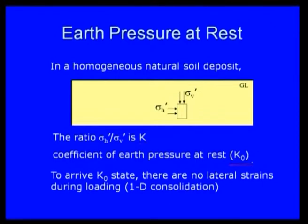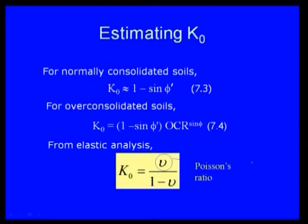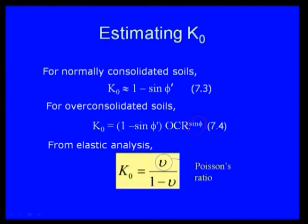To arrive at the K0 state, the coefficient of earth pressure at rest, there must be no lateral strain during loading — that means one-dimensional consolidation. For normally consolidated soils, K0 equals 1 minus sin phi. For over-consolidated soils, K0 equals (1 minus sin phi prime) times OCR to the power of sin phi. For elastic analysis, K0 equals mu divided by (1 minus mu), where mu is Poisson's ratio.